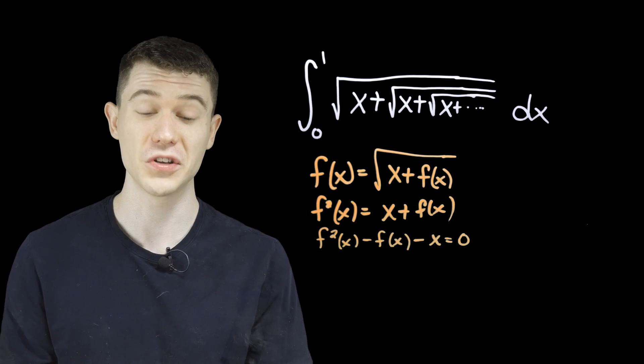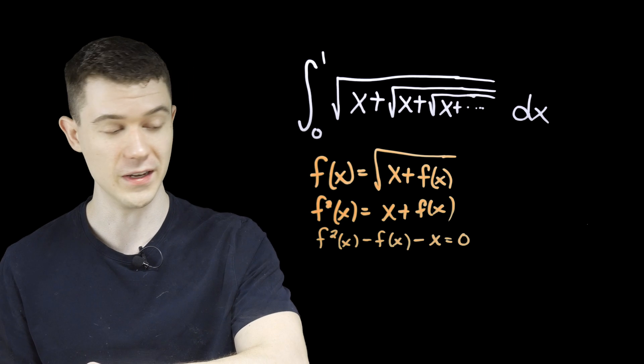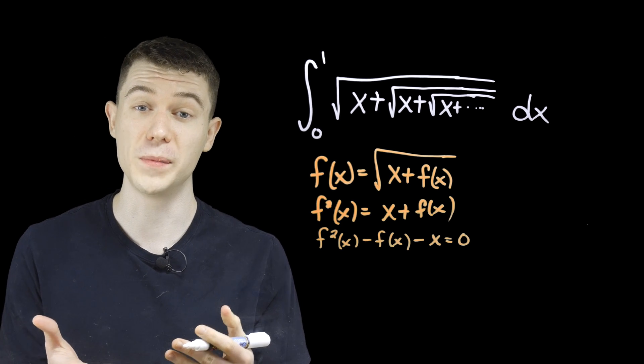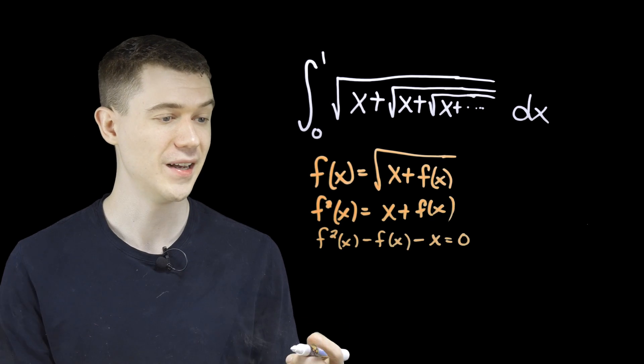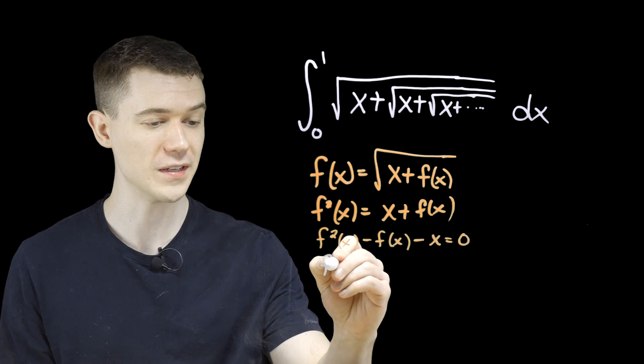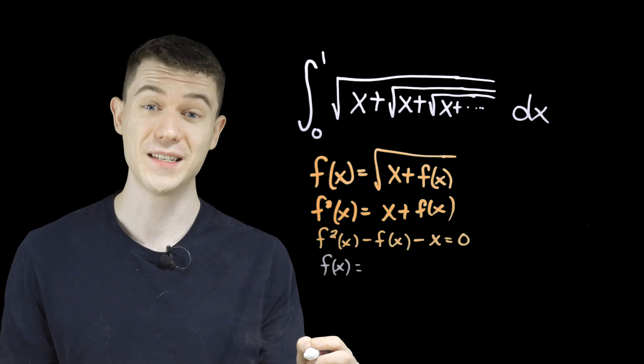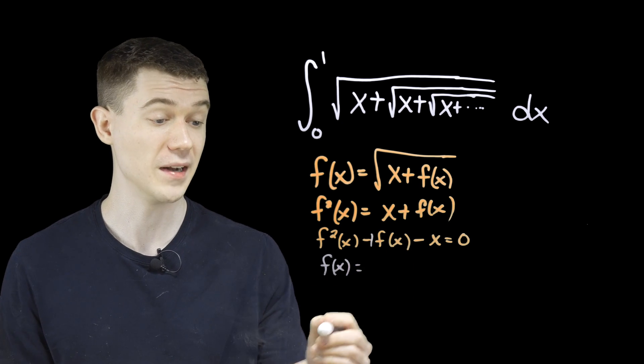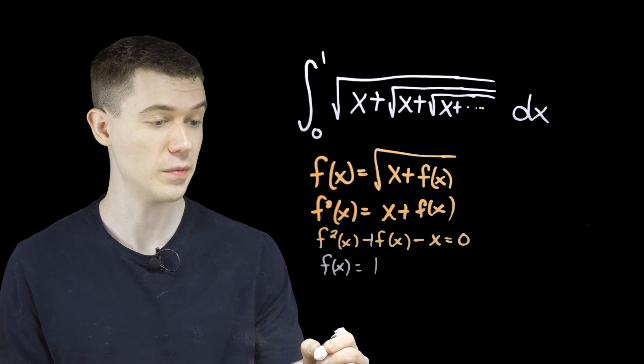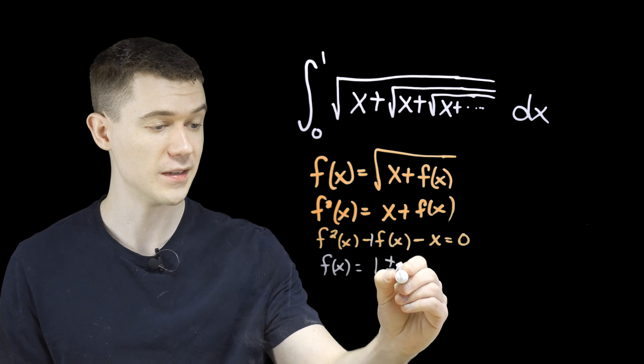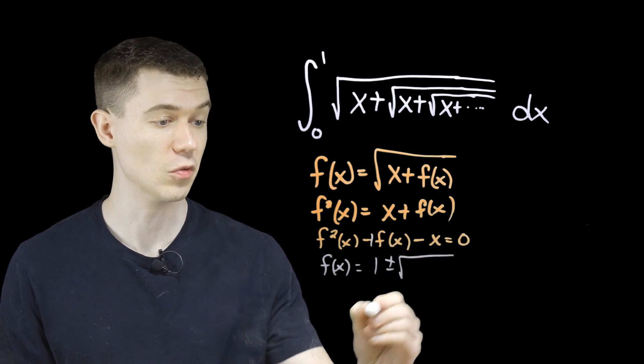And we can even just use the good old quadratic formula on this. Usually the quadratic formula says x equals, but in this case it's not x equals, it's f of x equals. And then it goes like minus b, so b in this case is minus one, minus minus one would be one, plus or minus the square root of b squared.